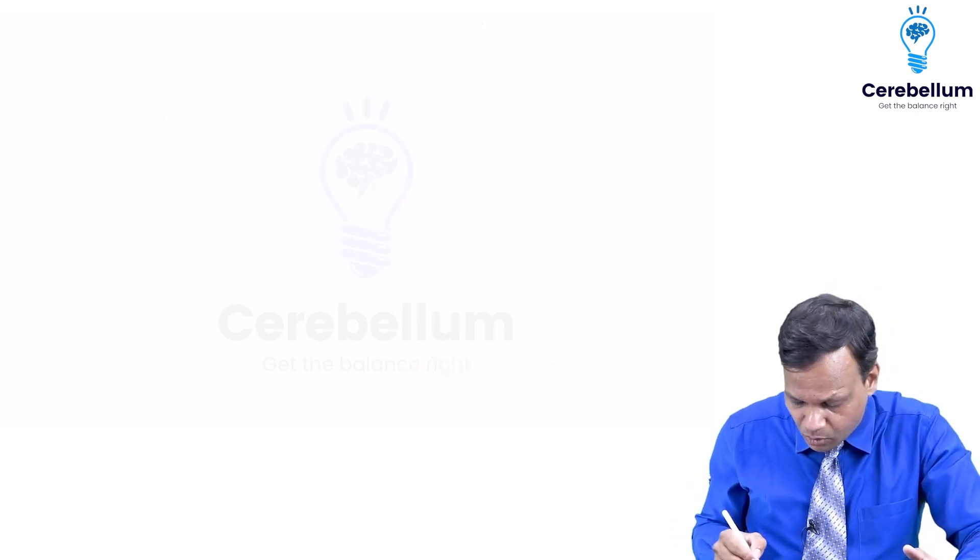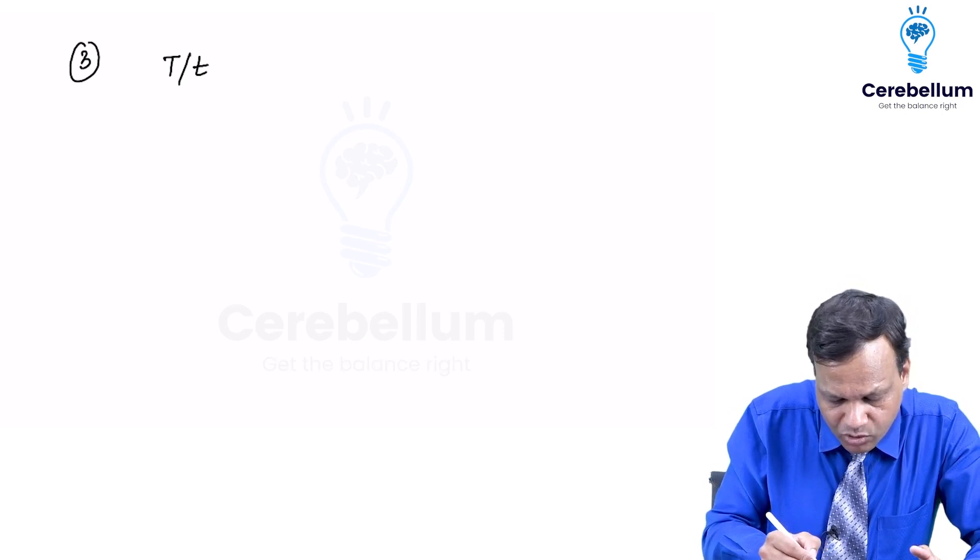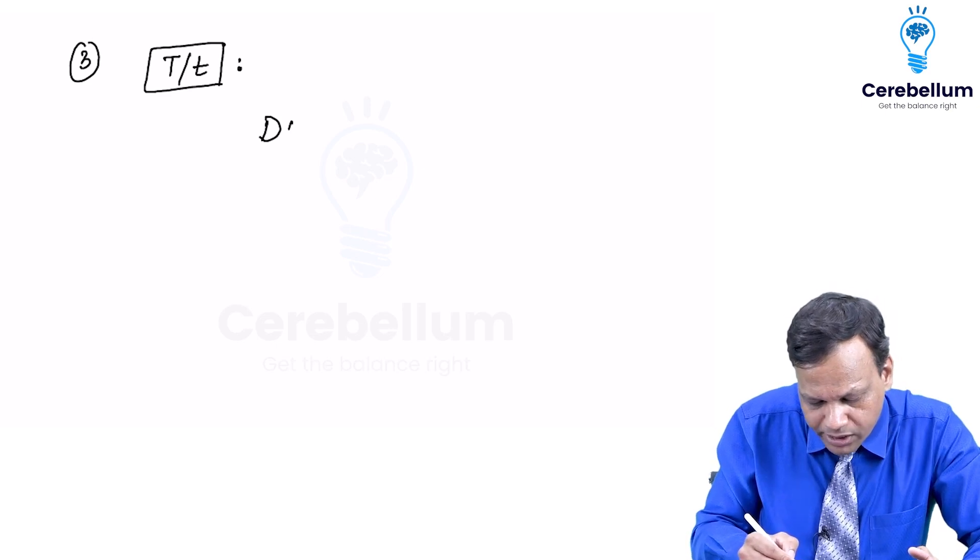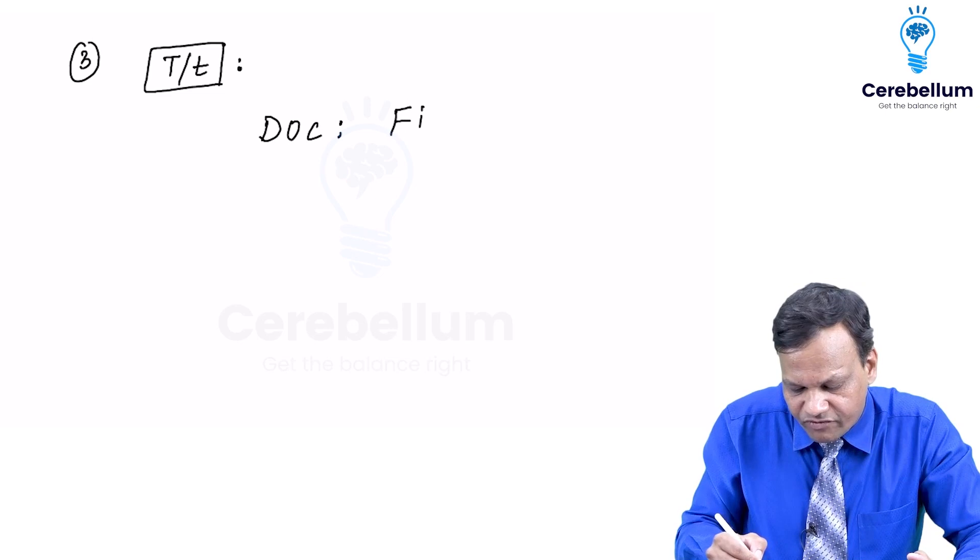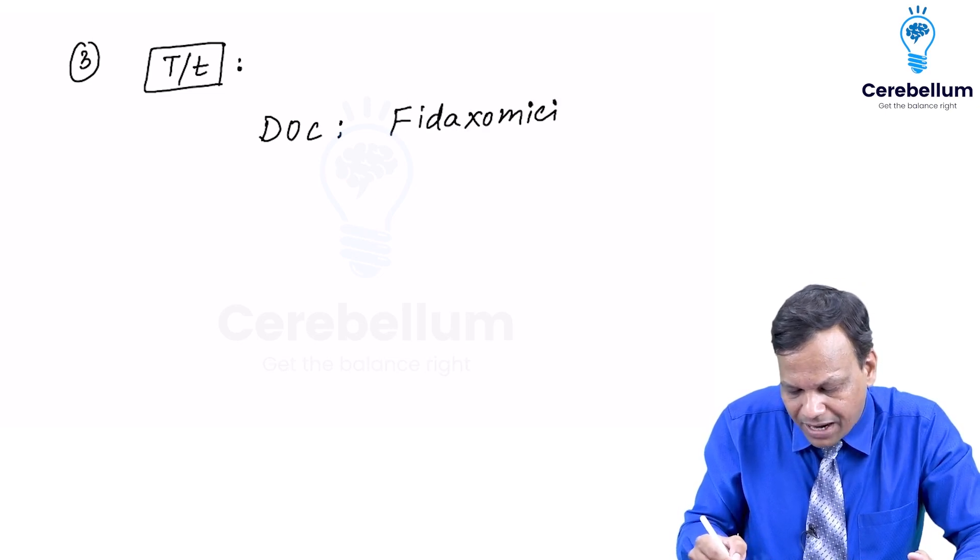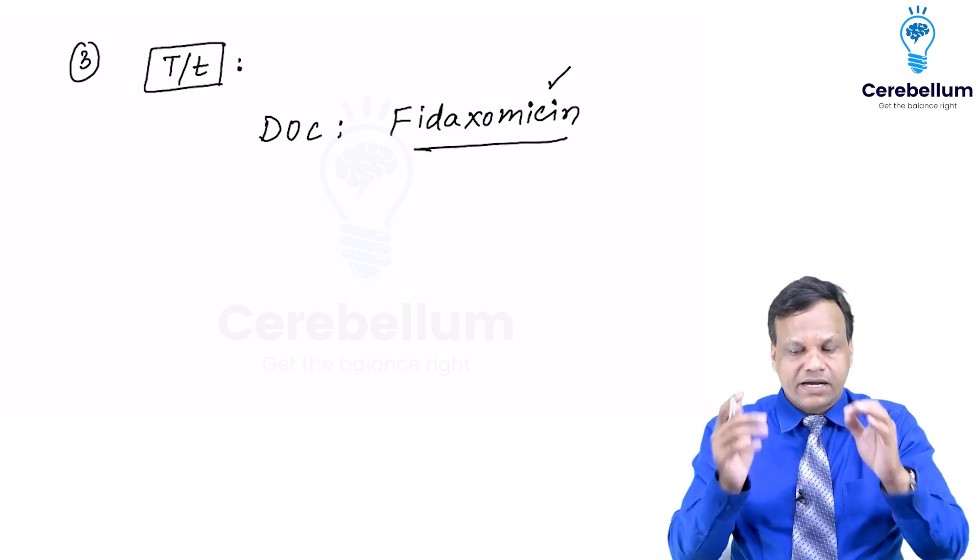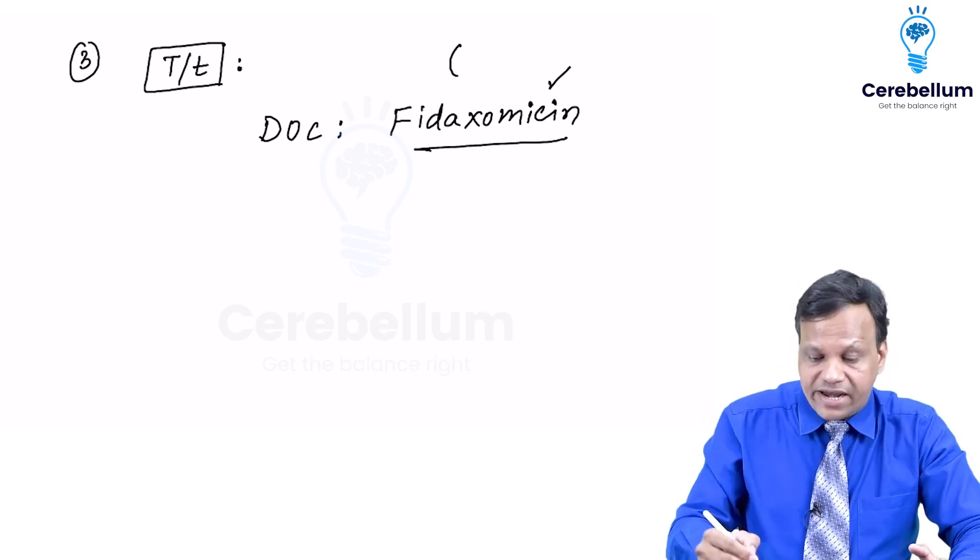Now moving to third and most important thing how to treat pseudomembranous colitis. So here the guidelines have changed. Now the drug of choice for pseudomembranous colitis has become fidaxomicin. Fidaxomicin is a macrolide. It has now become the drug of choice. Remember fidaxomicin inhibits the relapse.